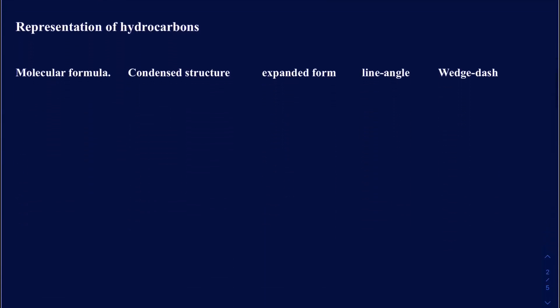Let's talk about how you're going to be representing hydrocarbons. If you know how to represent hydrocarbons, it becomes easier to draw the structures of organic compounds. Let's start out with a very simple hydrocarbon, CH4. CH4 is called methane, and don't worry about naming those yet — we'll learn about those a little bit.